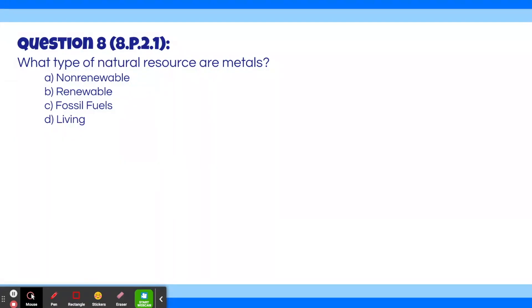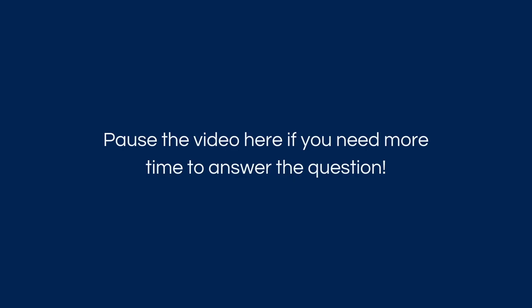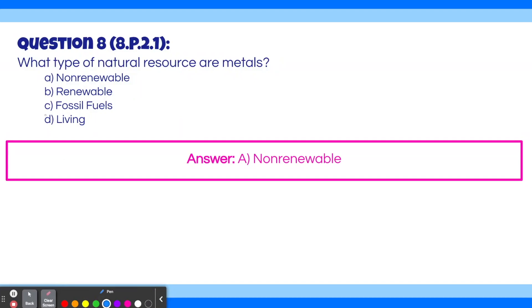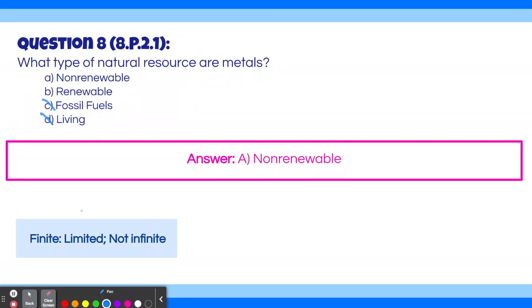Question 8. What type of natural resource are metals? A. Non-renewable. B. Renewable. C. Fossil fuels. D. Living. The answer is A, non-renewable. We can cross out fossil fuels and living because metals are neither of those things. Metals are non-renewable because there is a finite amount of metals in Earth's crust. Metal doesn't regenerate itself the way plants and other renewable resources do. Once we use up all the metals in the crust, the Earth can't make more.